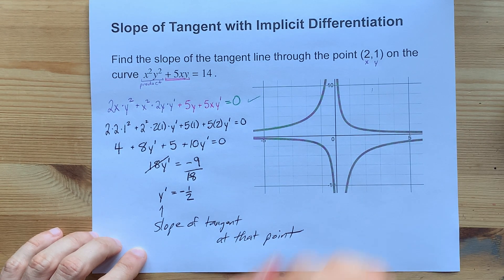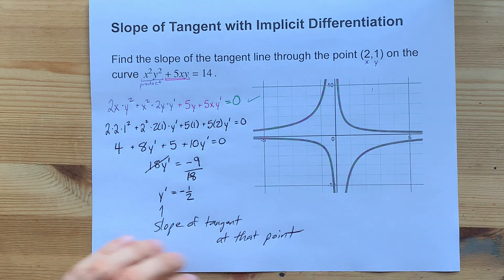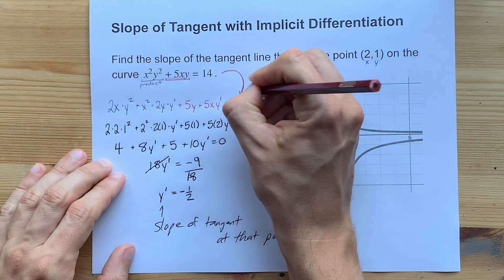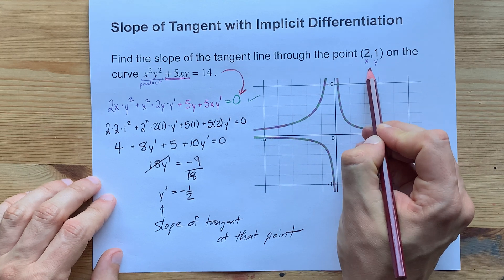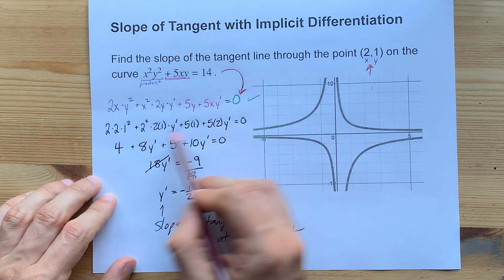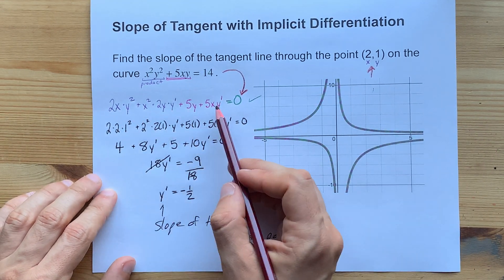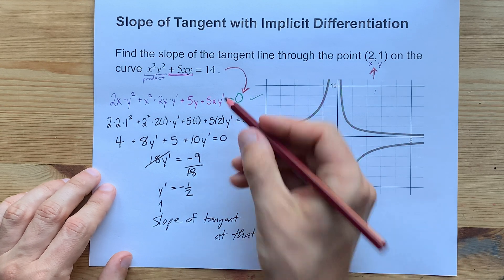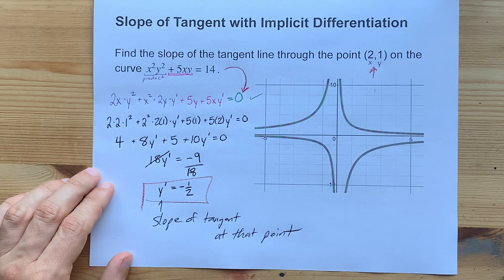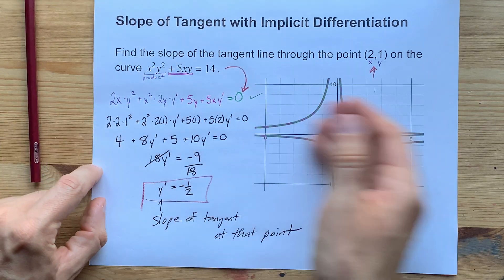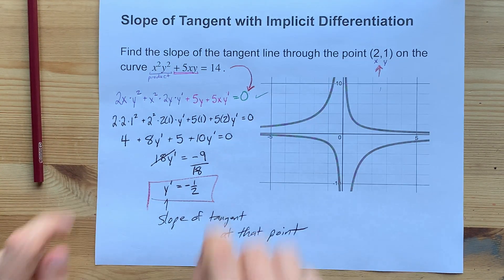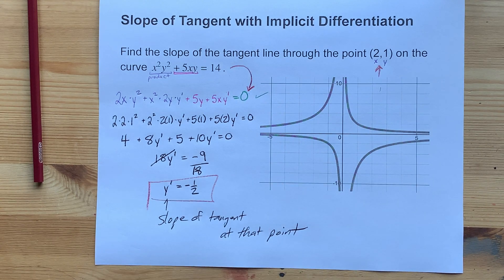The meat and bones of this question was the implicit differentiation. The extra two marks or so was the plugging in of these values into the implicitly differentiated equation and then solving for the slope of the tangent at that point. Congratulations, you're now an absolute monster at math. Best of luck.